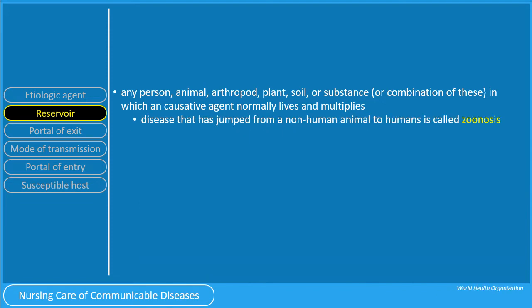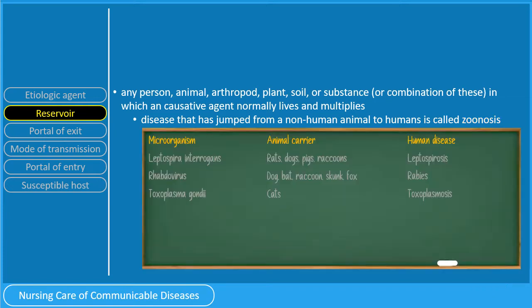A disease that has jumped from a non-human animal to humans is called zoonosis. This table shows common examples of zoonosis. Animal reservoirs of leptospirosis, caused by Leptospira interrogans, include rats, dogs, pigs, and even raccoons. Rabies, caused by a rhabdovirus, has dogs, bats, raccoons, skunks, and fox as their reservoir. Toxoplasma gondii, the causative agent of toxoplasmosis, has cats as the animal carrier.